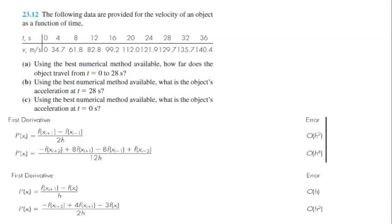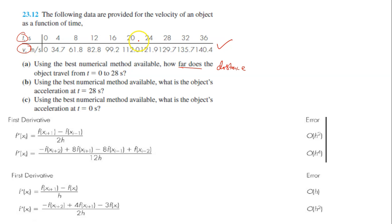The next question provides data for the velocity of an object as a function of time. Using the best numerical method available, how far does the object travel from t equals 0 to 28 seconds? Since we have velocity and time, distance is obtained by integration — integrating v dt. Because it says best numerical method, your first choice should be Simpson's 3/8, then 1/3.